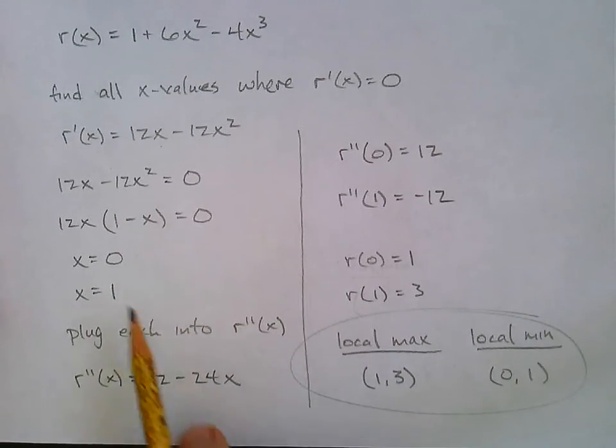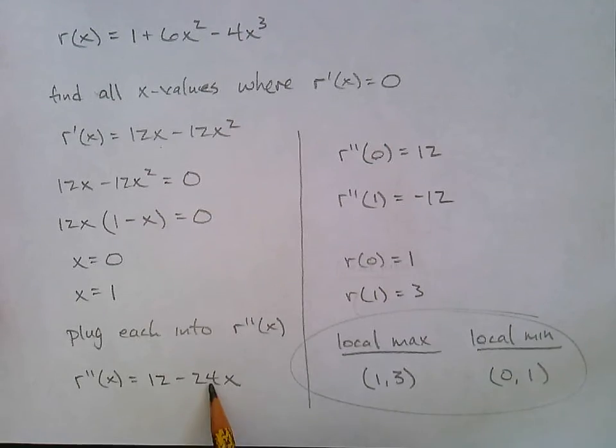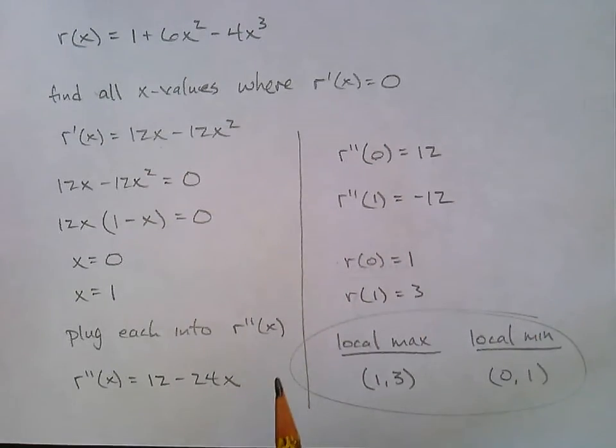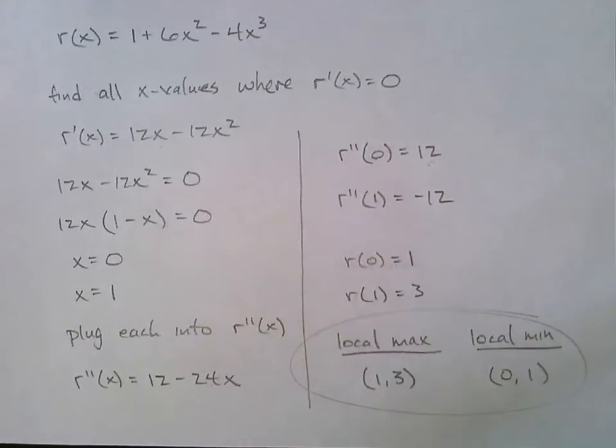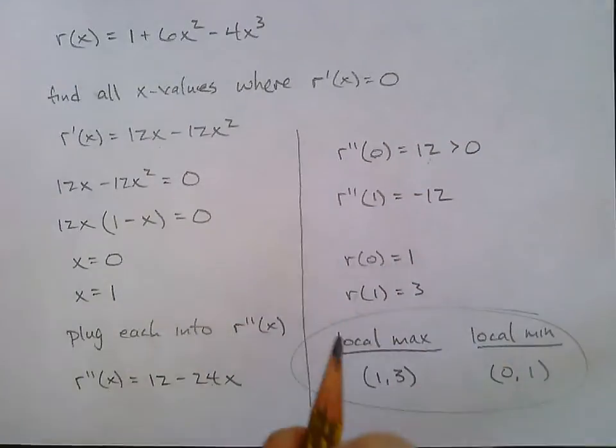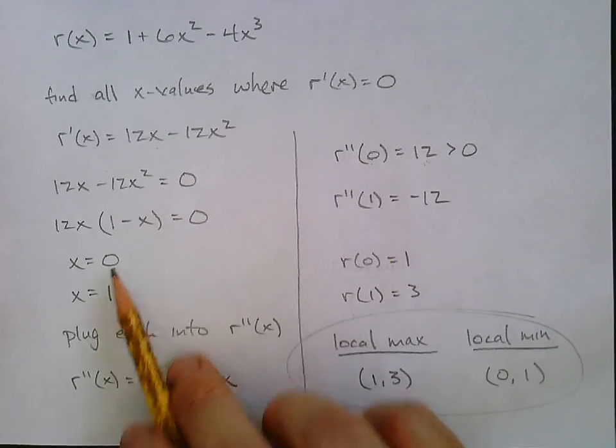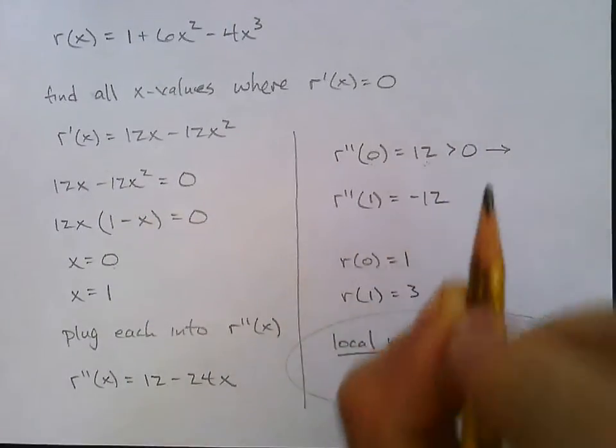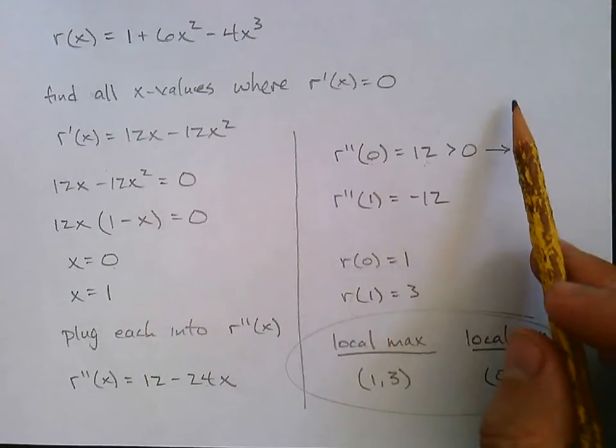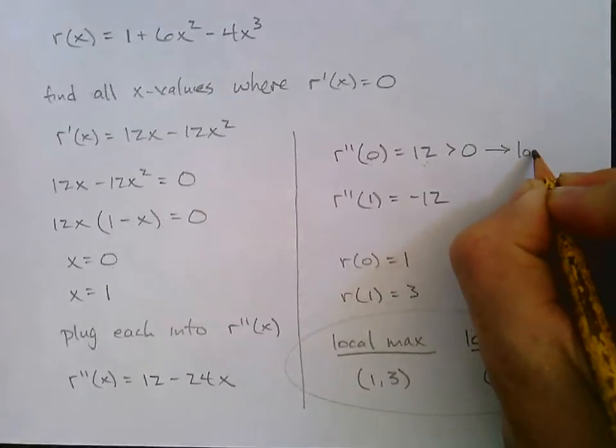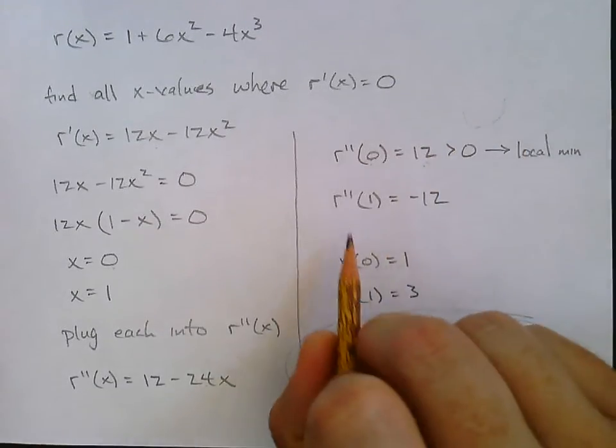If we plug in each. So if I plug zero into the second derivative, I get 12, 12 minus 24 times zero. And as we look at that, we think what's the big deal? Well, is that positive or negative? Well, it's positive. So is zero a local max or a local min? So we know the first derivative is zero. We know the second derivative is positive. So that means it's concave up. That's a local min. Concave up.